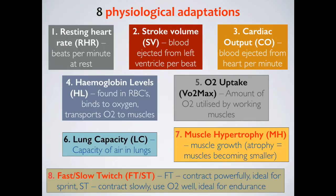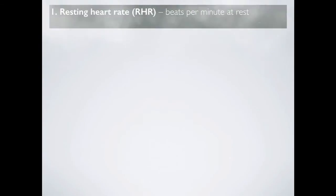The eighth is the effect on fast and slow twitch muscle fibres. Fast twitch muscle fibres contract powerfully and are ideal for sprinting and powerful activities. Slow twitch muscle fibres contract slowly, use oxygen very well, and are ideal for endurance.